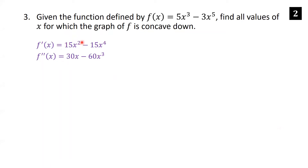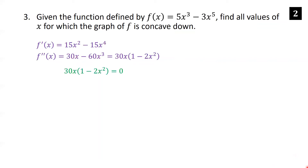Differentiating again using the power rule: 2 times 15 is 30, subtract 1 from the exponent, giving 30x; and 4 times 15 is 60, subtract 1 from 4, giving 60x cubed. So the second derivative is 30x minus 60x cubed. To find where concavity changes, we set the second derivative equal to zero. Factoring out 30x gives 30x times the quantity 1 minus 2x squared, and we set each factor equal to zero.